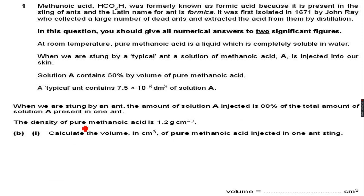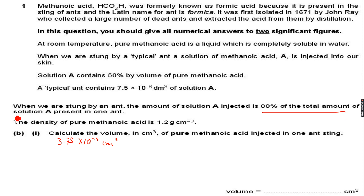Now we come back to this question: when we are stung by an ant, the amount of solution A injected is 80% of the total amount of solution A present in one ant. One ant produces 3.75×10⁻³ centimeter cube of pure methanoic acid, and 80% of solution A is injected into us.